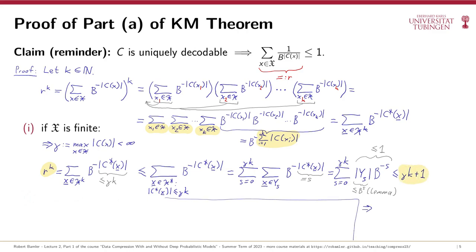What does this mean? If we solve for gamma, we find that gamma ≥ (r^k - 1)/k. This inequality holds for all positive integers k, and gamma is finite and independent of k. If r were larger than 1, then (r^k - 1)/k would go to infinity as k goes to infinity, so there would be some integer k for which the right-hand side exceeds the finite constant gamma. Therefore r cannot be larger than 1, which means the Kraft inequality holds — at least for the case of a finite alphabet.